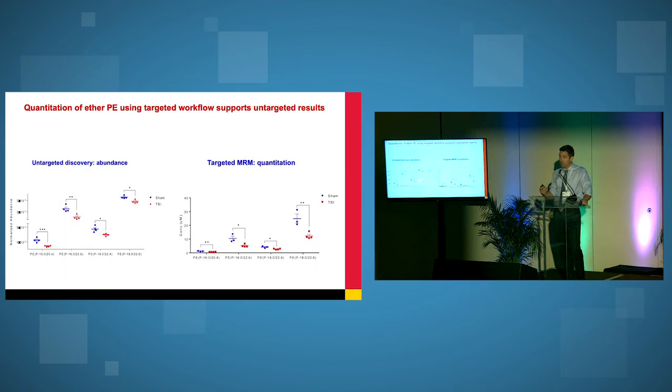This is advantageous, especially in terms of internal standards, especially when we want to do quantitation. But this is an example of just looking at MRMs of these vinyl ether PEs on a C18 separation. What's interesting is that our discovery workflow corresponded really well with our quantitative workflow, indicating that the discovery workflow was robust and it gives us confidence that we can transfer back and forth between discovery and quantitation.